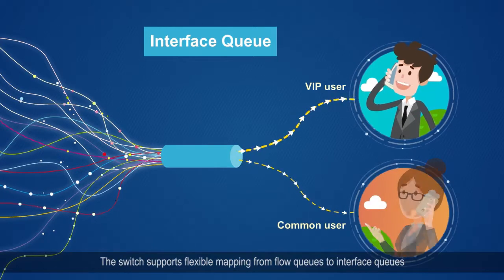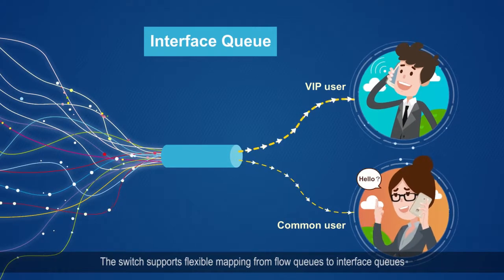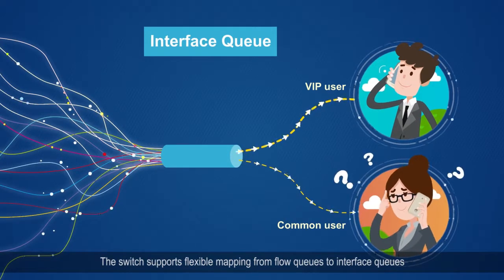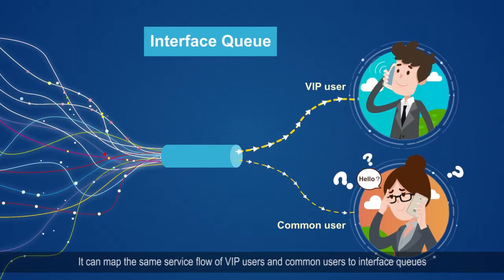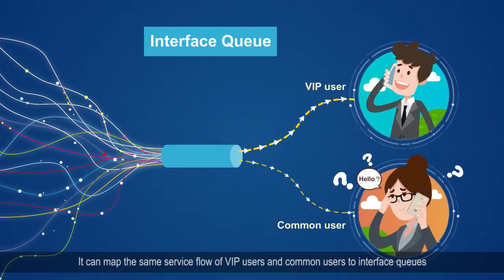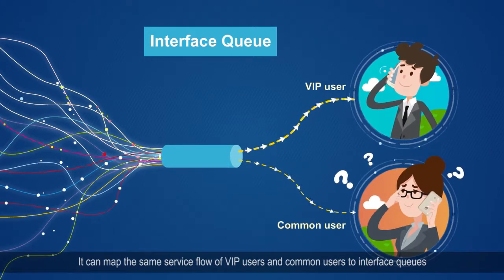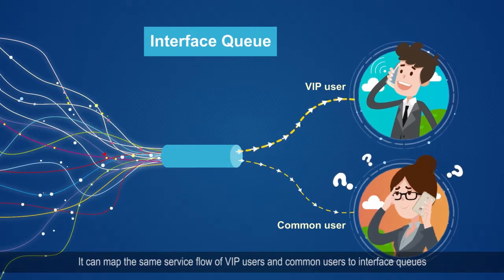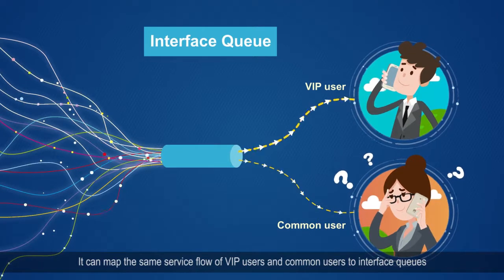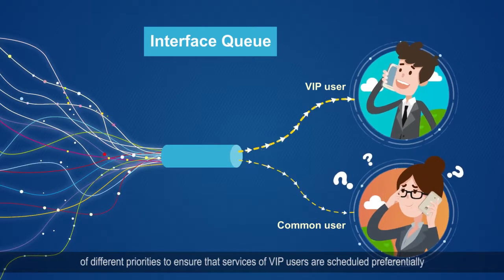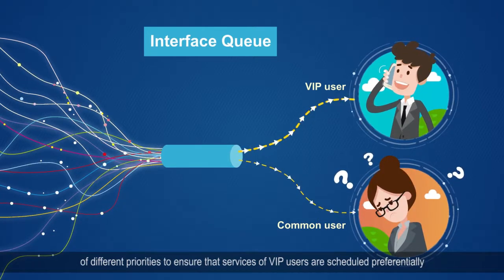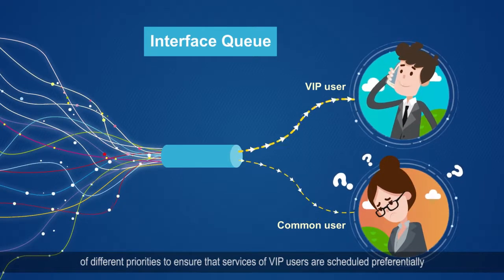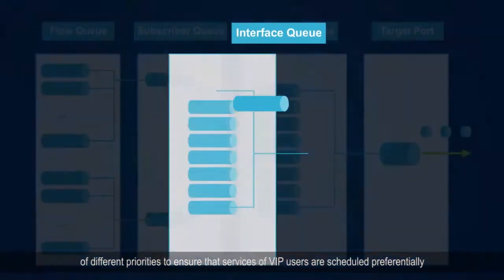The switch supports flexible mapping from flow queues to interface queues. It can map the same service flow of VIP users and common users to interface queues of different priorities to ensure that services of VIP users are scheduled preferentially.